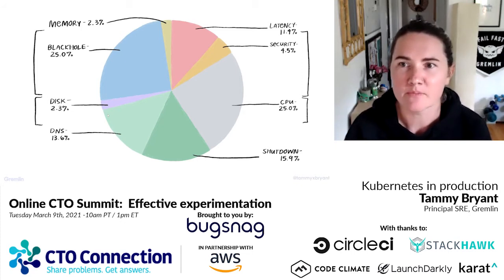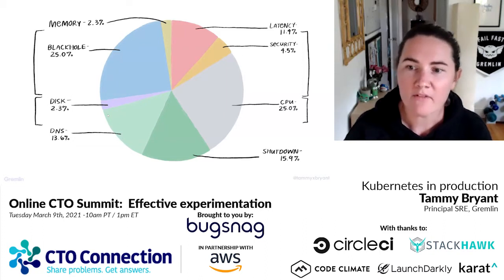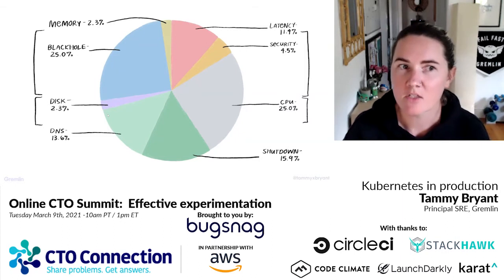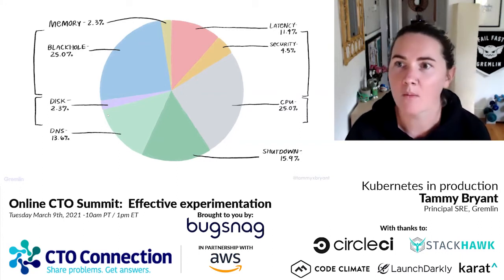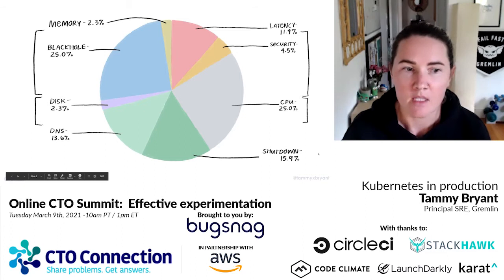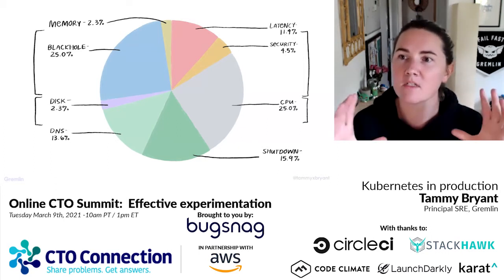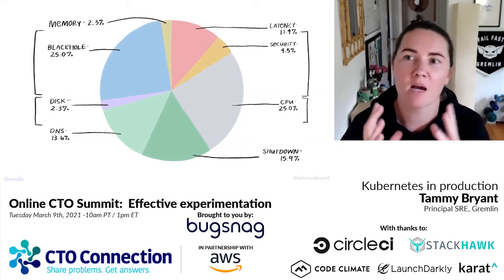So what is this data I'm showing you? This is all of the publicly reported outages related to Kubernetes that you can find on the internet, broken down by different categories. 25% of publicly reported outages are CPU related. 25% are black hole, meaning unavailable node or unavailable pod. Shutdown of nodes or pods is just over 15%. DNS is also significant at 13.6%. Latency is 11.4%. And then smaller categories: memory and disk at 2.3% each, and security at 4.5%.